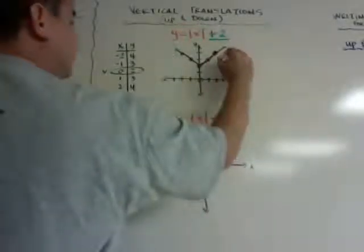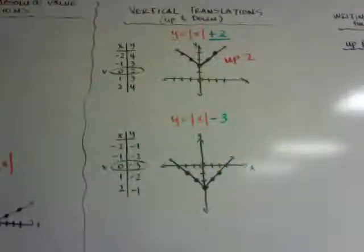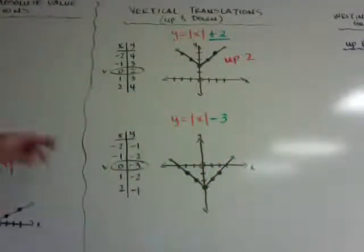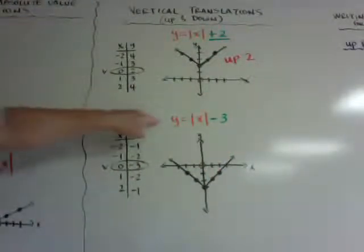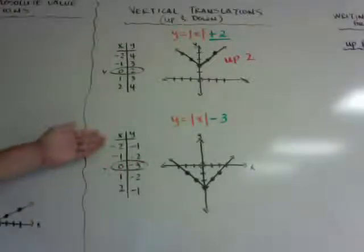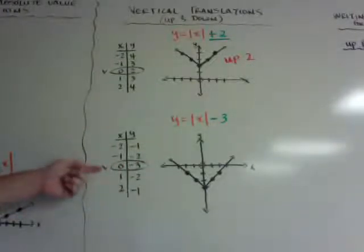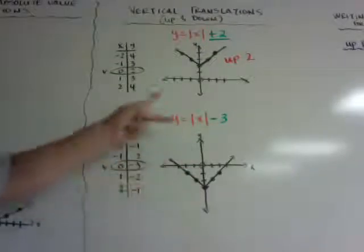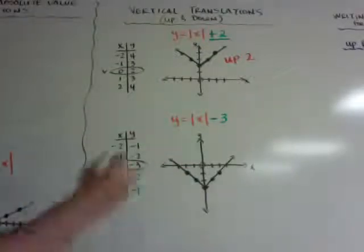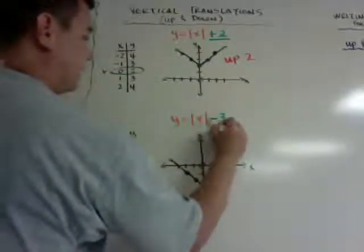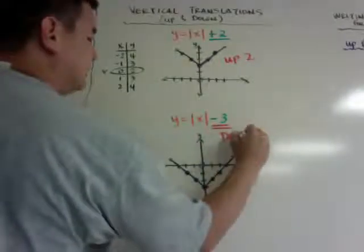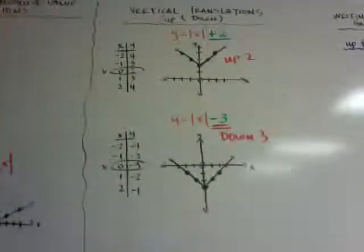I did another example here with absolute value of x minus 3. Here's my xy table. My vertex, you can see, is going to be 0, negative 3. That means it's slid down or translated down 3. So negative 3 here means it goes down 3 units. It keeps that perfect V, but it just goes up and down.